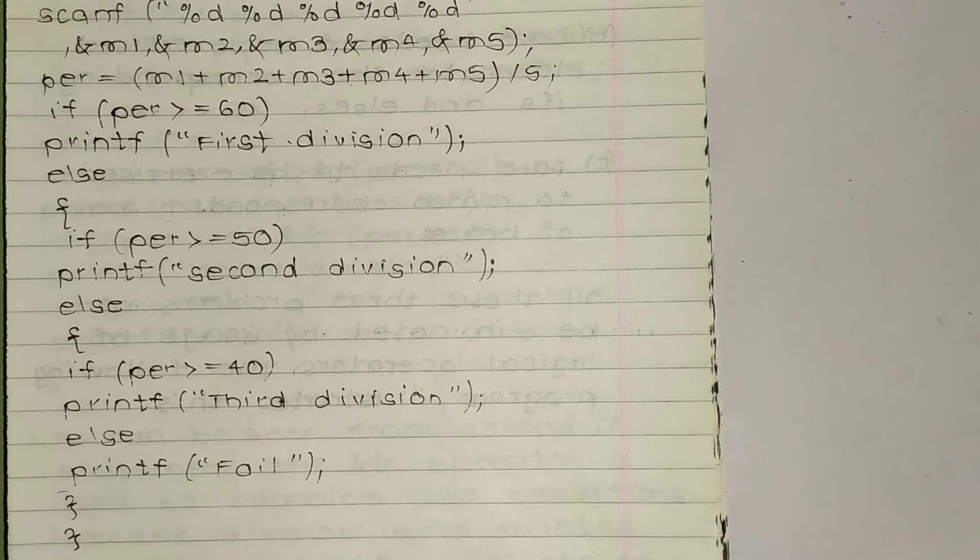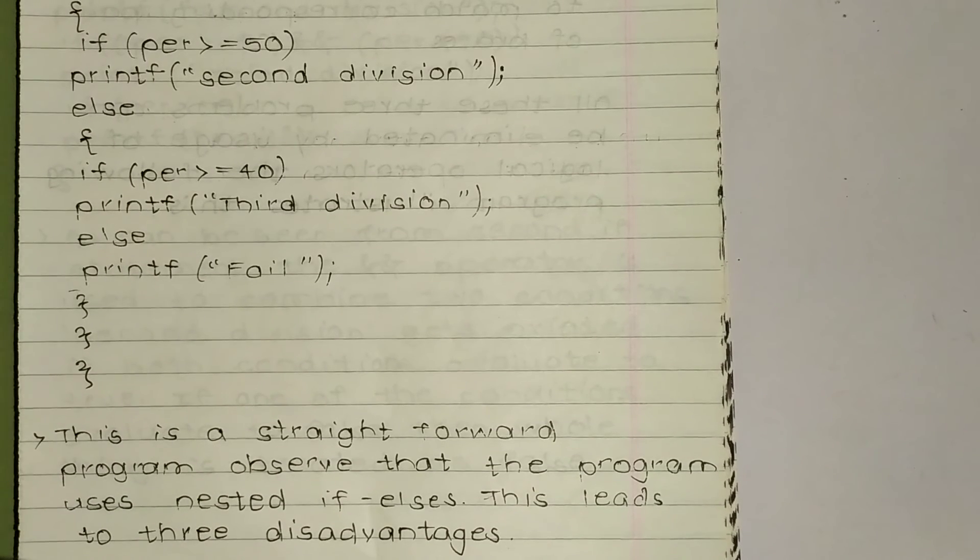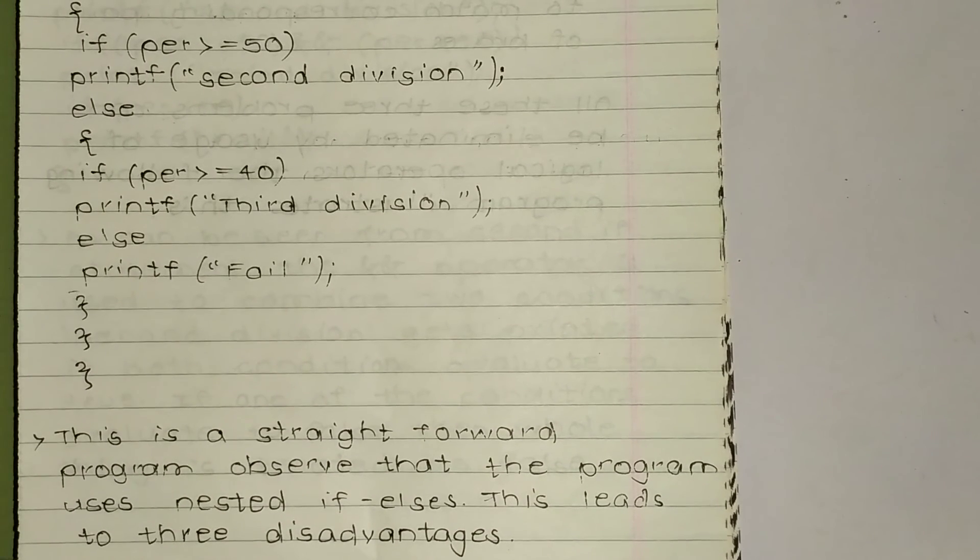If percent is greater than or equal to 60 then first division, else if percentage is greater than or equal to 50 then print second division. Else if percentage is greater than or equal to 40 then third division, or else printf fail. And then three are closing brackets. So this program is about using if else statement for this calculation.